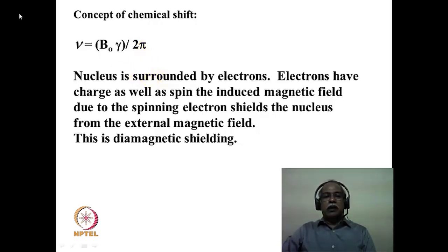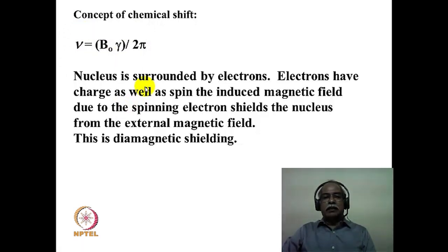When we talk about this equation, we are considering a bare hydrogen without consideration of any electron density around the hydrogen. We seldom have hydrogen without any electron density in a molecule. In fact, we will have different electron density depending upon the chemical nature of the hydrogen. If the hydrogen is highly acidic, it will be surrounded by less electron density. If the hydrogen is highly basic, it will be surrounded by high electron density. Different hydrogens come under different electron clouds depending upon their chemical environment.